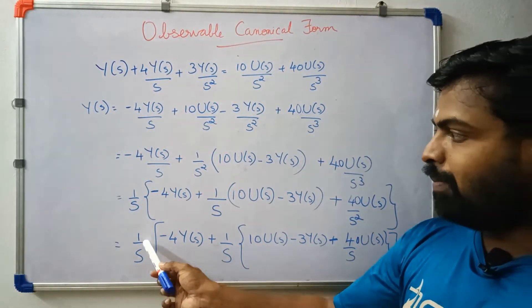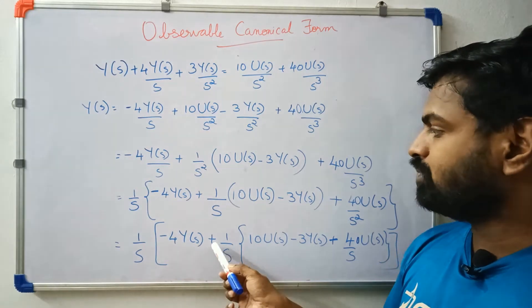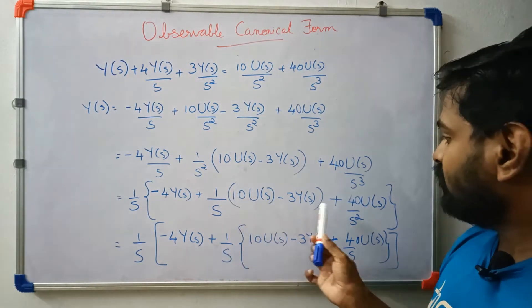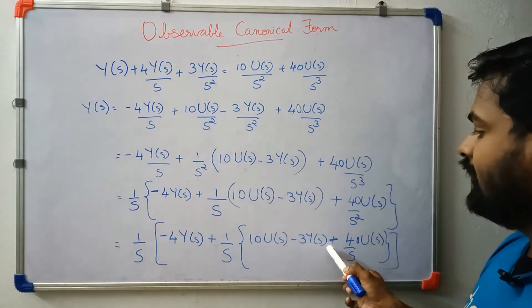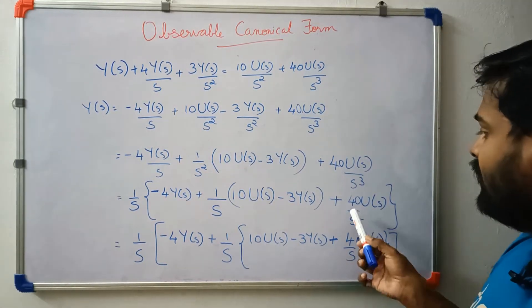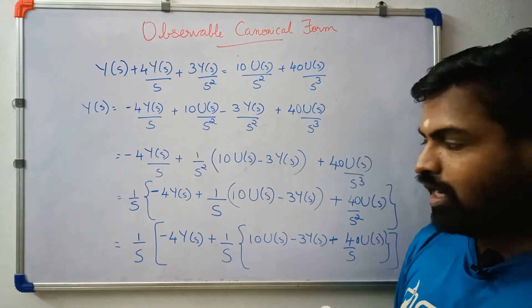We define state variables. The expression involves 1 over s minus 4 Y(s), plus 10 U(s) minus 3 Y(s), plus 40 over s squared.